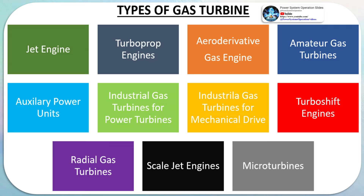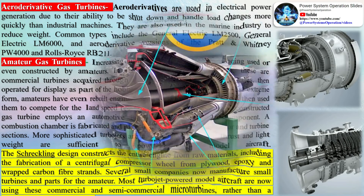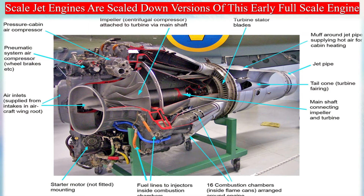Increasing numbers of gas turbines are being used or even constructed by amateurs. In its most straightforward form, these are commercial turbines acquired through military surplus or scrapyard sales and operated for display as part of engine collecting. In extreme cases, amateurs have rebuilt engines beyond professional repair and used them to compete for the land speed record. The simplest self-constructed gas turbine employs an automotive turbocharger as the core component, with a combustion chamber plumbed between the compressor and turbine sections. The Schreckling design constructs the entire engine from raw materials, including a centrifugal compressor wheel from plywood, epoxy, and carbon fiber strands.